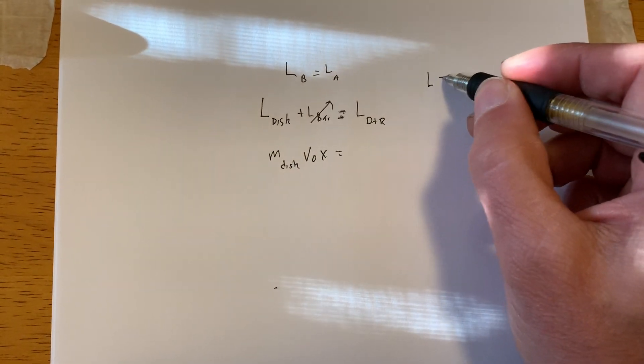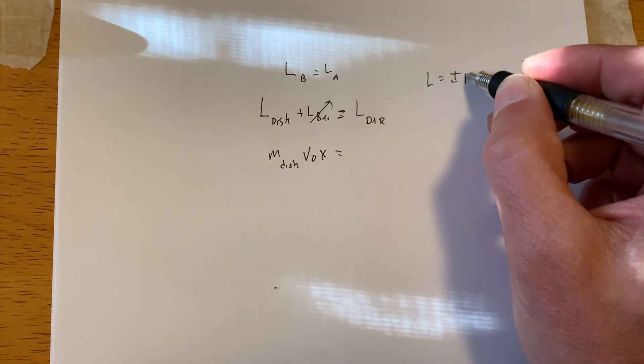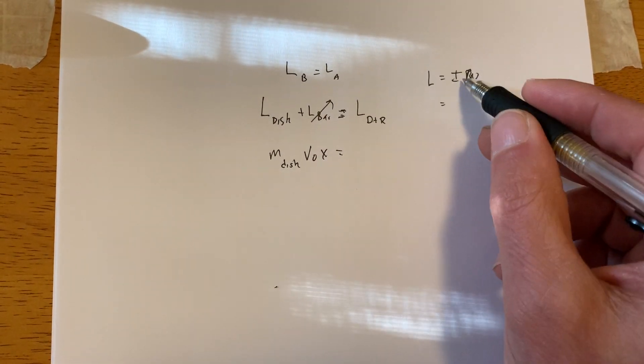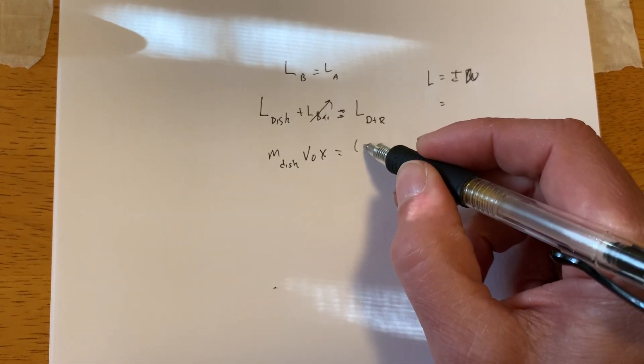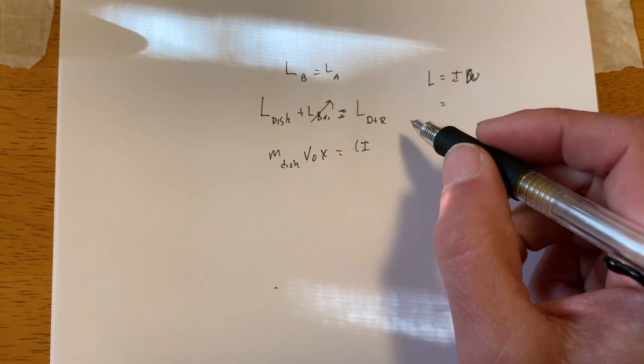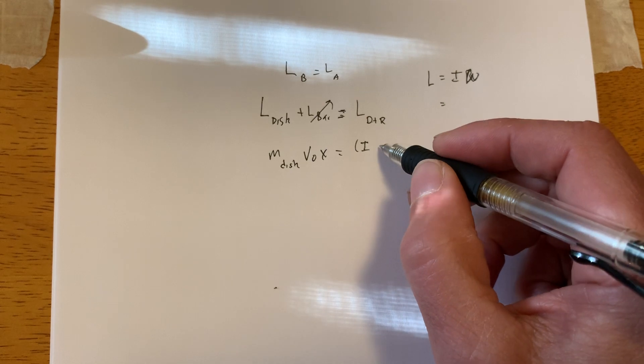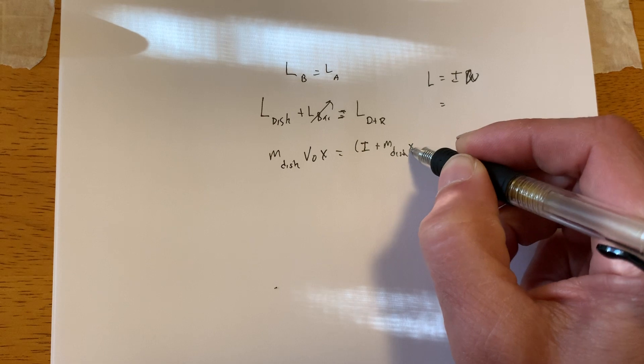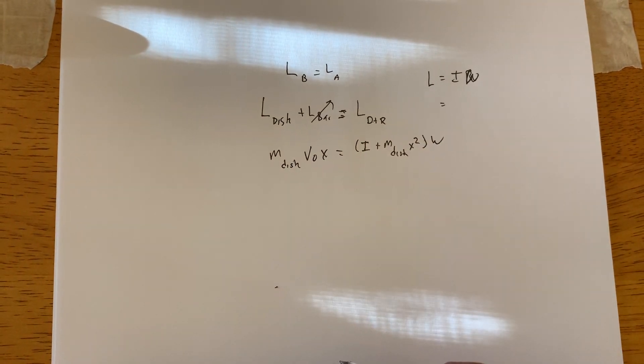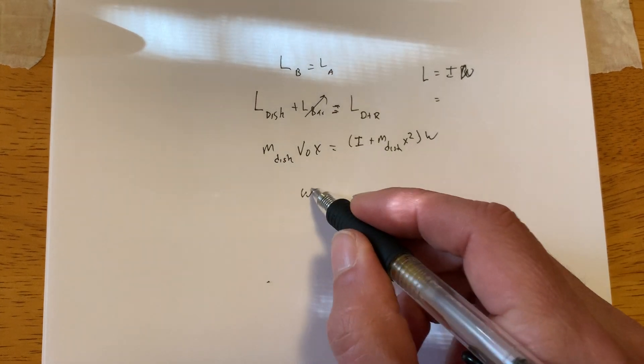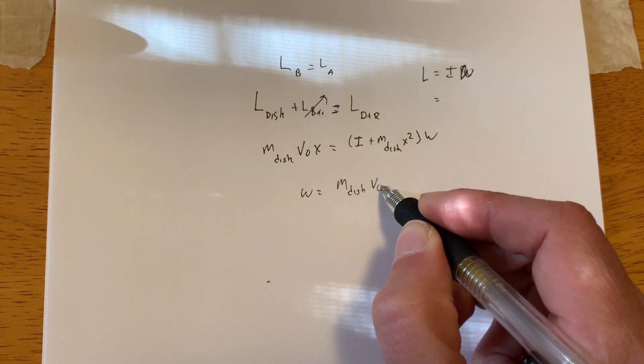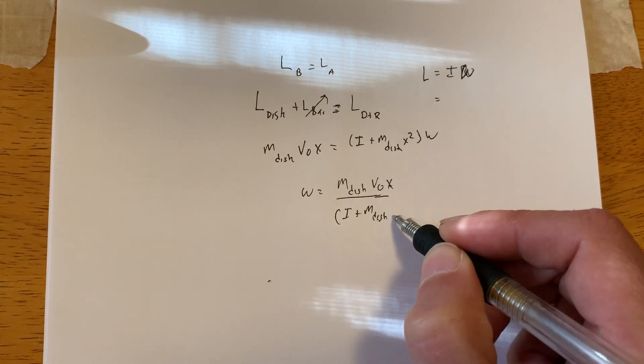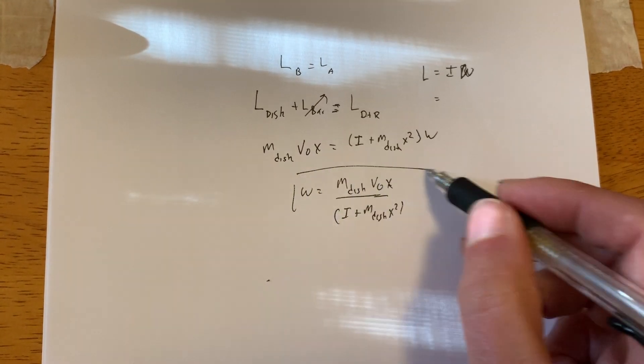Alright, so what is L again? Don't forget, L is going to be I omega. And so in this particular case I have two objects that are there now. So I have, and they tell you, they just tell you that the bar is I bar. And they tell you that the moment of inertia for the disk is M disk X squared omega. So omega is just going to be equal to M disk V0 X divided by I plus M disk X squared. So there is my equation derived.